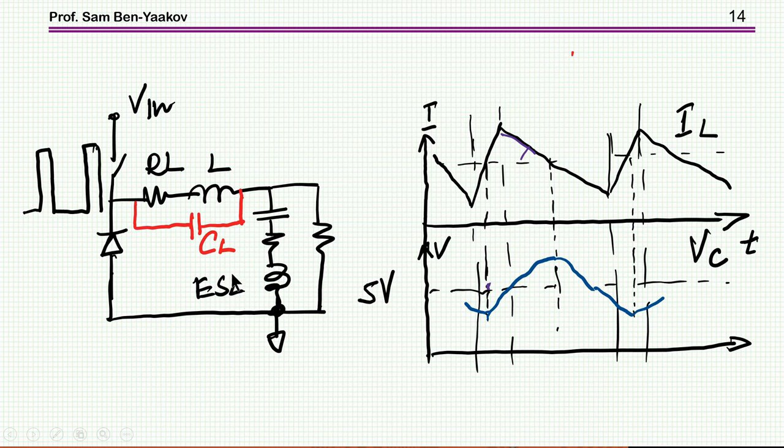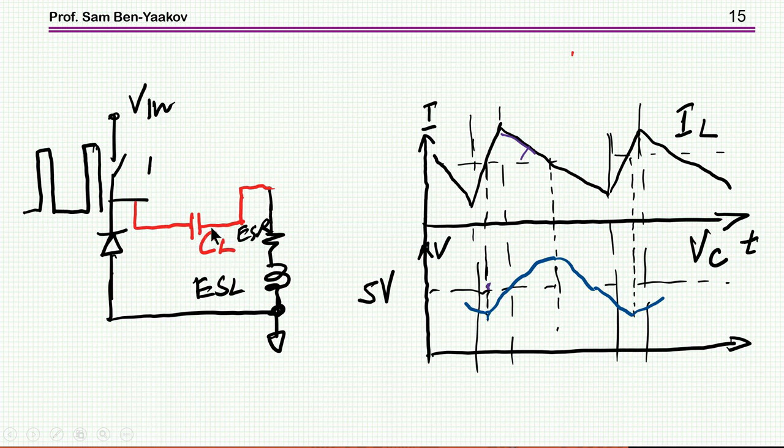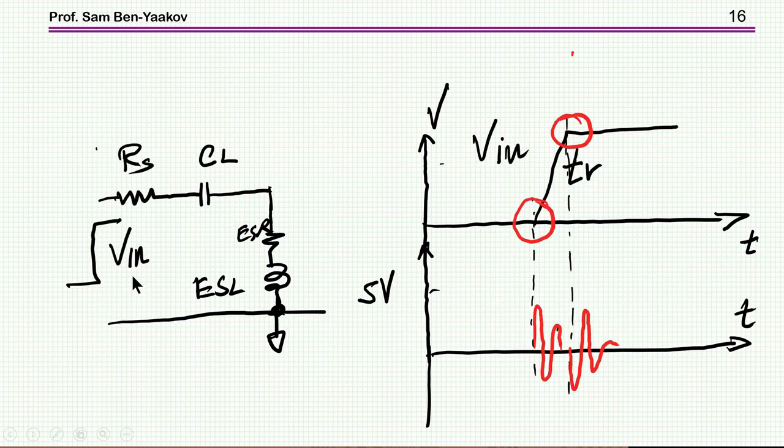So now we understand that we do have a problem like this. This is the capacitance, this is the inductance. And we have here a step function when this thing is switching between VIN and just about ground voltage on the diode.